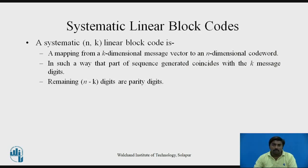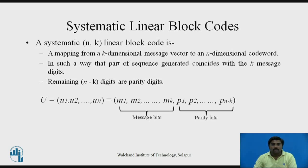Now let's see what is meant by systematic linear block codes. A block code (n, k) is said to be systematic when a mapping from a k-dimensional message vector to an n-dimensional codeword is done such that a part of the sequence generated coincides with the k message digits. This means the k message digits appear unchanged in the codeword, and the remaining n-k digits are parity bits, or redundant bits.